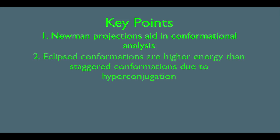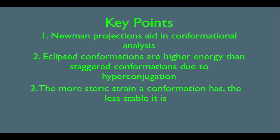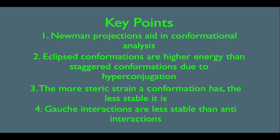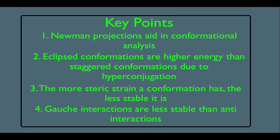We're also going to see that eclipsed conformations are higher energy than staggered conformations due to something called hyperconjugation. We're also going to see that the more steric strain a conformation has, the less stable it is. And number four, we're going to see that gauche interactions are less stable than anti-interactions.